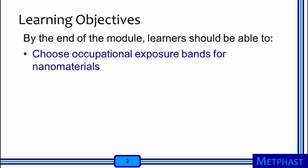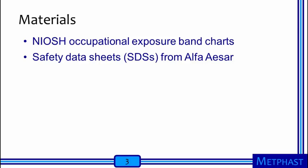The objective of this activity is to illustrate the derivation of occupational exposure bands of nanomaterials. To carry out this activity, you will need the National Institute for Occupational Safety and Health, NIOSH's Occupational Exposure Band Chart, based on the Globally Harmonized System for Hazard Classification and Labeling.